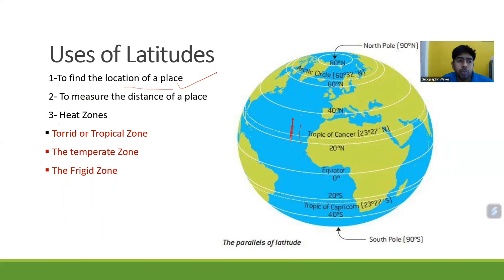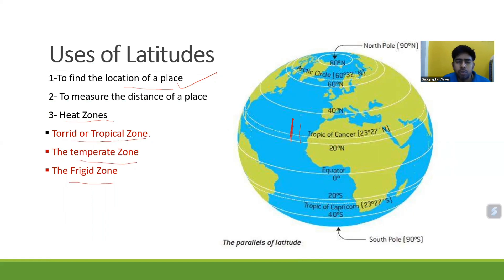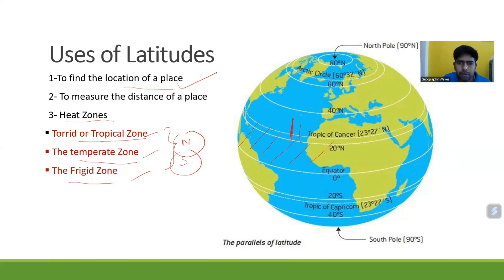Third use is deciding heat zones. With the help of latitudinal lines, Earth is divided into different heat zones: the torrid or tropical zone, the temperate zone, and the frigid zone - three zones in each hemisphere. The torrid or tropical zone lies between the equator and the Tropic of Cancer in the northern hemisphere, and is considered the torrid or tropical zone.